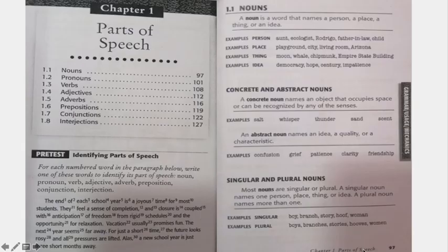Specifically today, we will discuss the first part, which is the nouns. Nouns are categorized according to whether they are abstract or concrete, singular or plural, possessive, common or proper, or collective. There are a lot of things we have to consider with nouns in general.